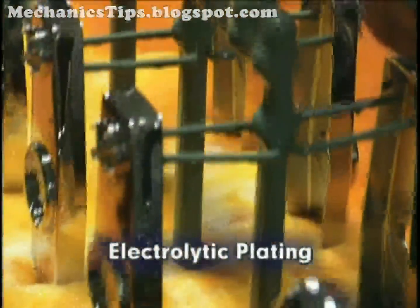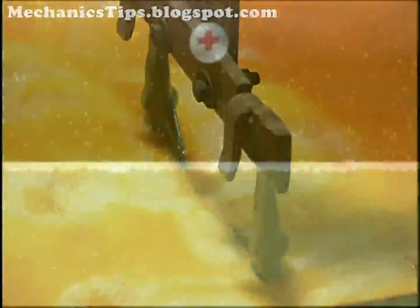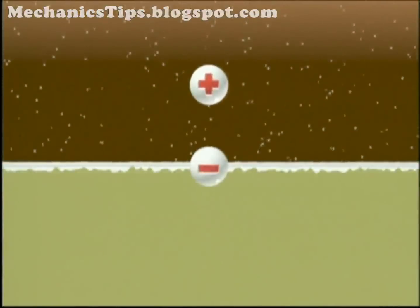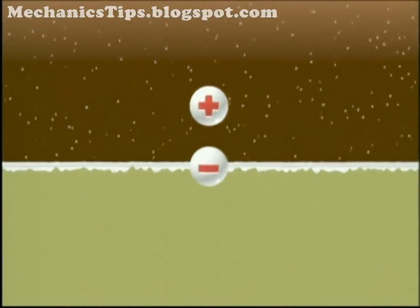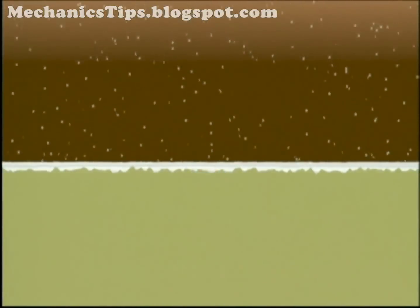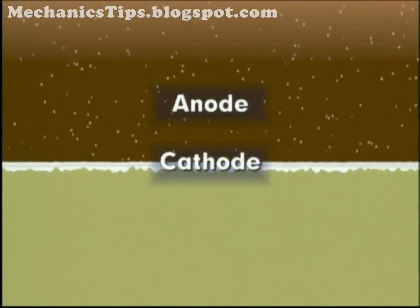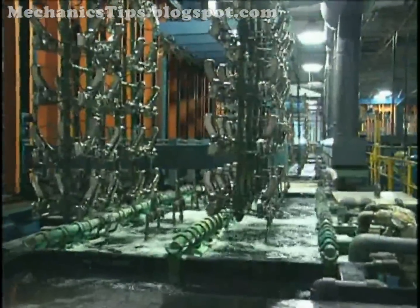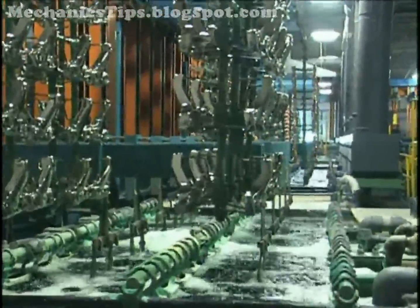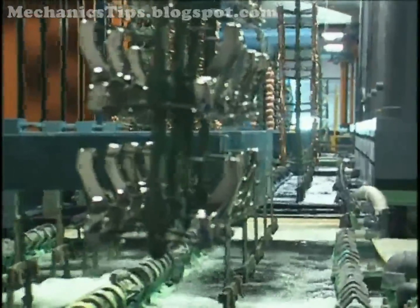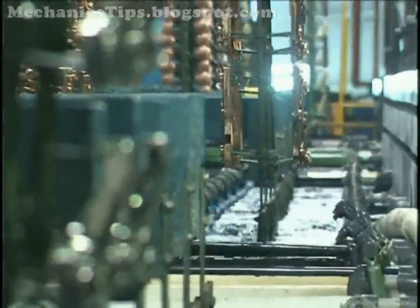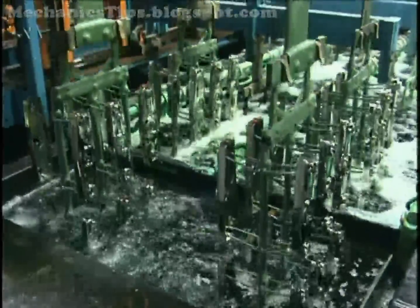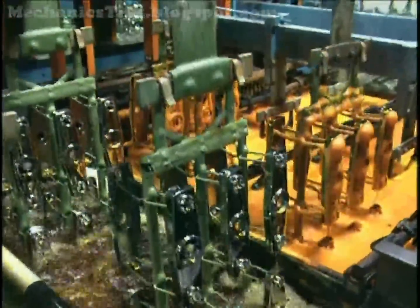Electrolytic plating uses electrical current to draw or precipitate positively charged plating metals out of solution to coat the negatively charged conductive plastic part surface. The positively charged plating metals are referred to as the anode, and the negatively charged plastic part, the cathode. To arrive at the final chrome plated finish, plastic parts must go through a minimum of 12 preparation, plating solution, and rinse baths. The various plating solution baths include a bright copper plating bath, a bright nickel plating bath, and the final chrome plating bath.